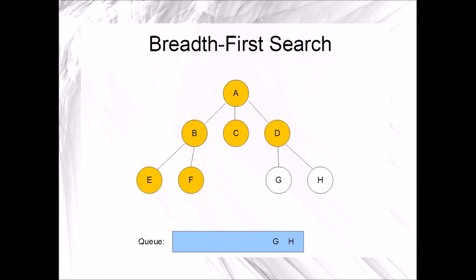Since the queue is not empty, we will have another repetition of the while loop. It begins by dequeuing G and marking it. Next, we will enqueue all adjacent unmarked vertices. There are none.